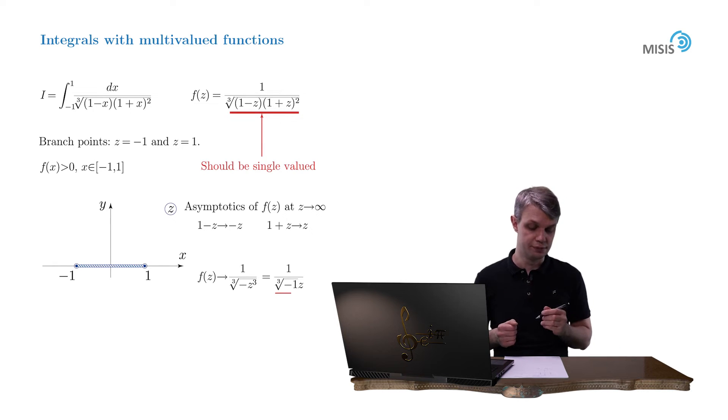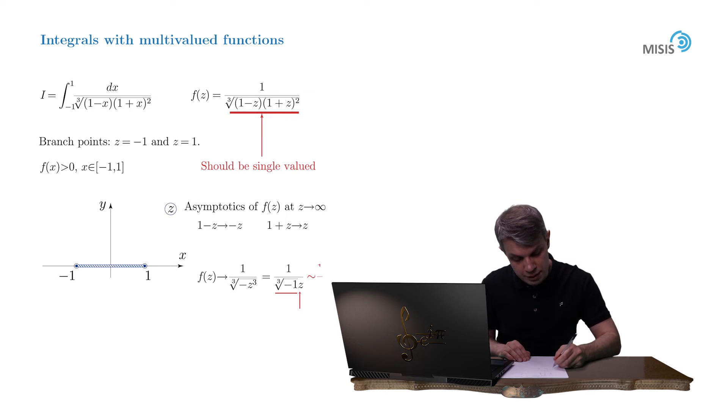Don't let this cubic root confuse you. It's just some number. We don't know yet how to decipher it, because the cubic root is triple-valued. But what we should really pay attention to is the dependence of our function on z. We see that it's just a simple 1 over z dependence.